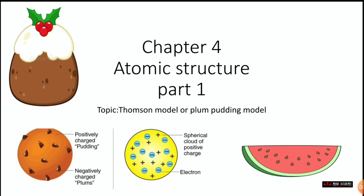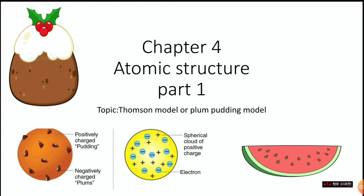Hello everyone, my name is Anjali and welcome back to my channel Modi Academy. Today we are studying chapter number four, Atomic Structure, Part One. We are learning about Thomson's model. In this chapter, many atomic models have been given with different theories. This model is also called the Plum Pudding model, because it has been compared to plum pudding. Please first like and subscribe to my channel for more interesting content.